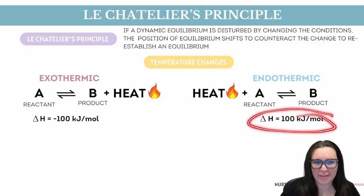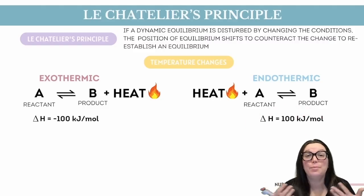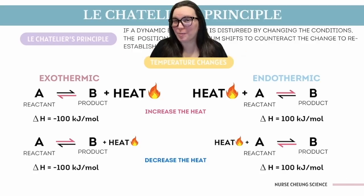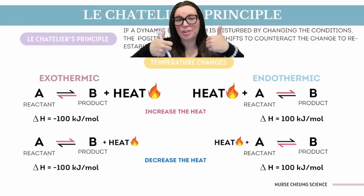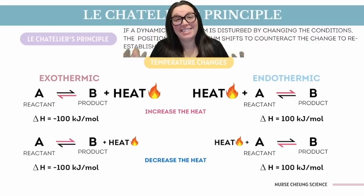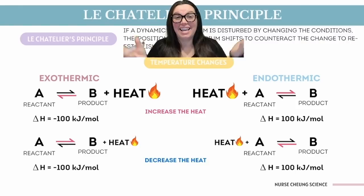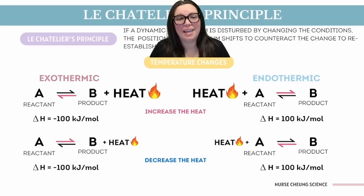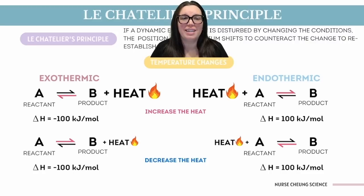If delta H is positive, then the reaction is endothermic, meaning it absorbs energy. So heat acts more like a reactant here, something the reaction needs to proceed. With this thermochemical data in mind, we can treat heat as another player in the reaction. If we increase the temperature, we essentially are adding more heat to the mix. The reaction is going to shift to the opposite side to use up that extra heat and relieve the stress. If we cool things down, removing the heat, the reaction is going to shift towards the side that produces heat to restore the balance. Temperature changes can tip the equilibrium in one direction or the other, just like adding or removing reactant or product.